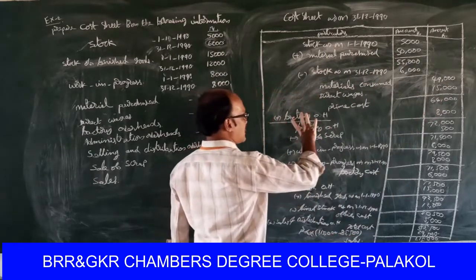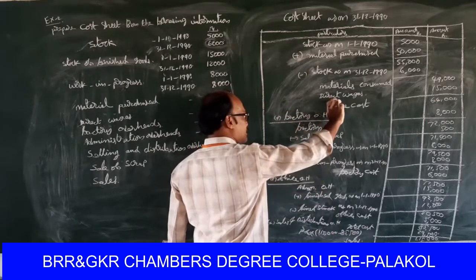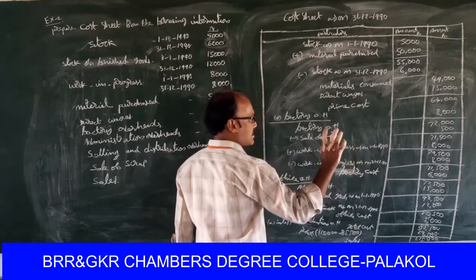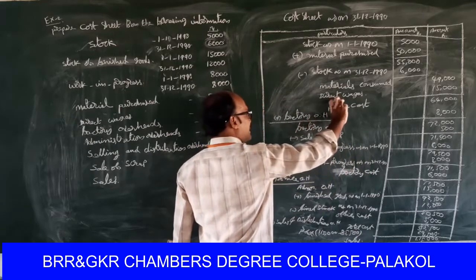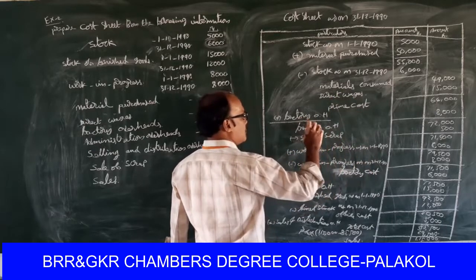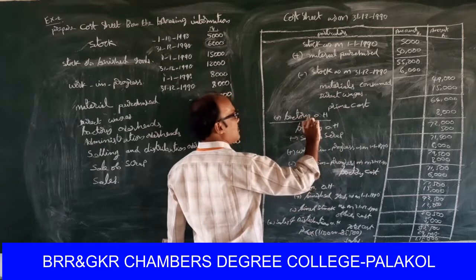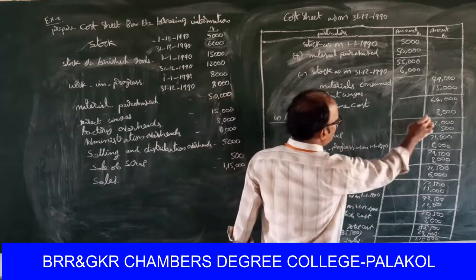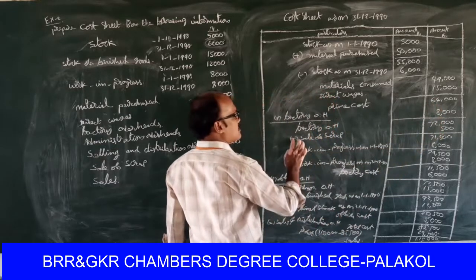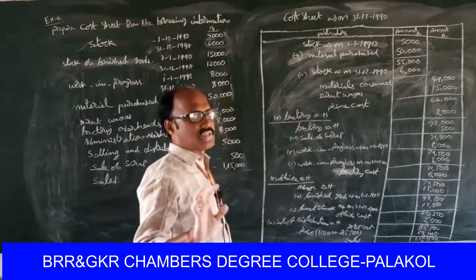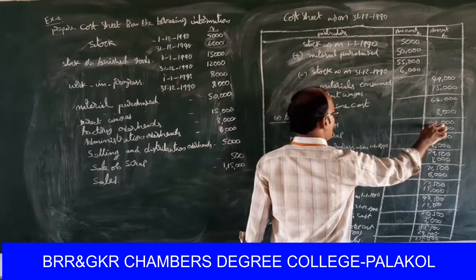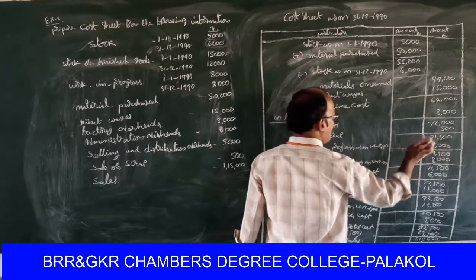Factory overheads eight thousand are added to prime cost to find factory cost. Sixty-four thousand plus eight thousand equals seventy-two thousand. Sale of scrap is income, not expenditure — so minus five hundred. Seventy-two thousand minus five hundred equals seventy-one thousand five hundred.